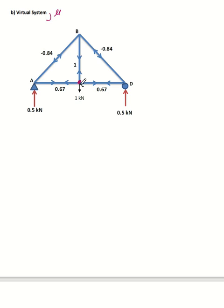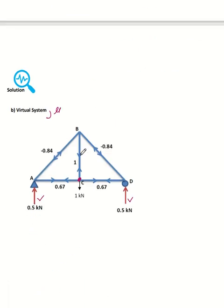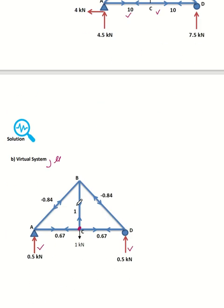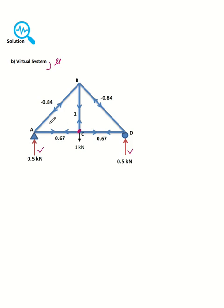After we place the one unit vertical load at joint C, the reactions will also change, so we have to recalculate the reactions at points A and D. For instance, in this example you get 0.5 and 0.5 at A and B. Then we find the internal force for each member under the virtual system — these are different values from the real system. Make sure you understand how the real system and virtual system each act on the truss.